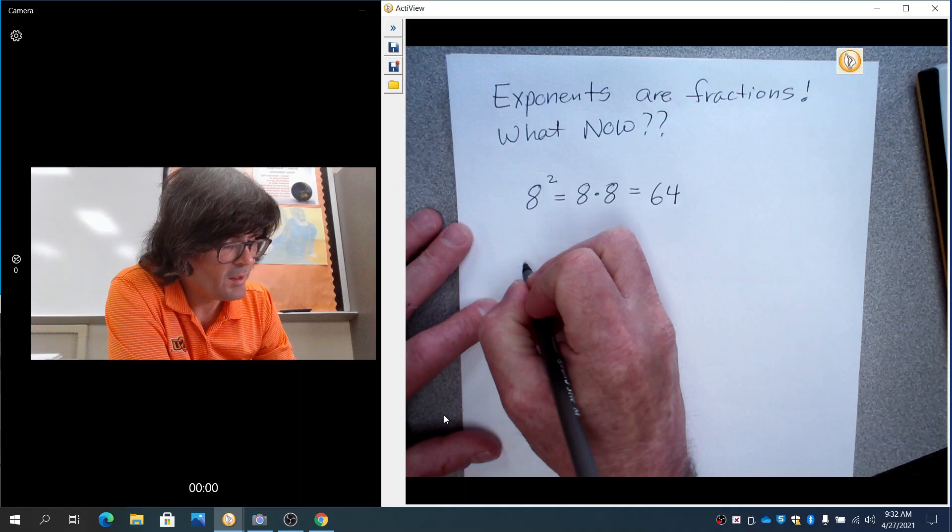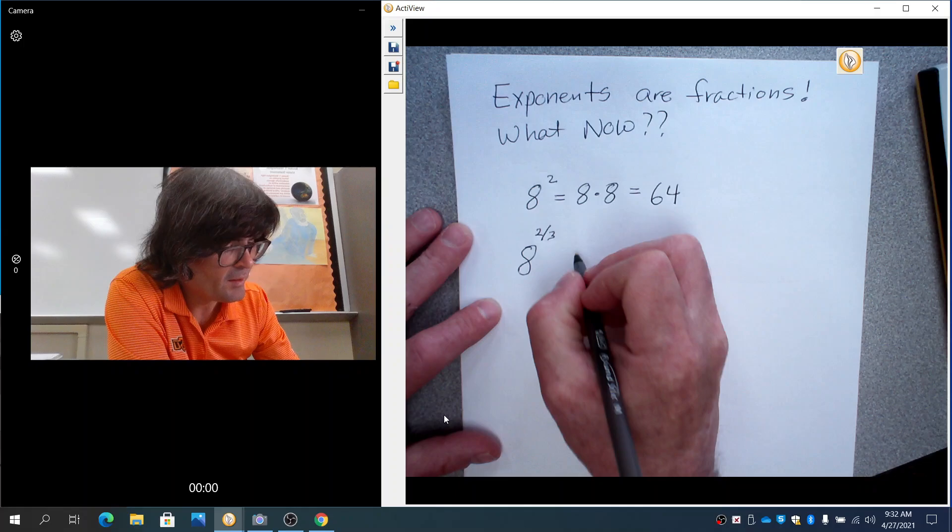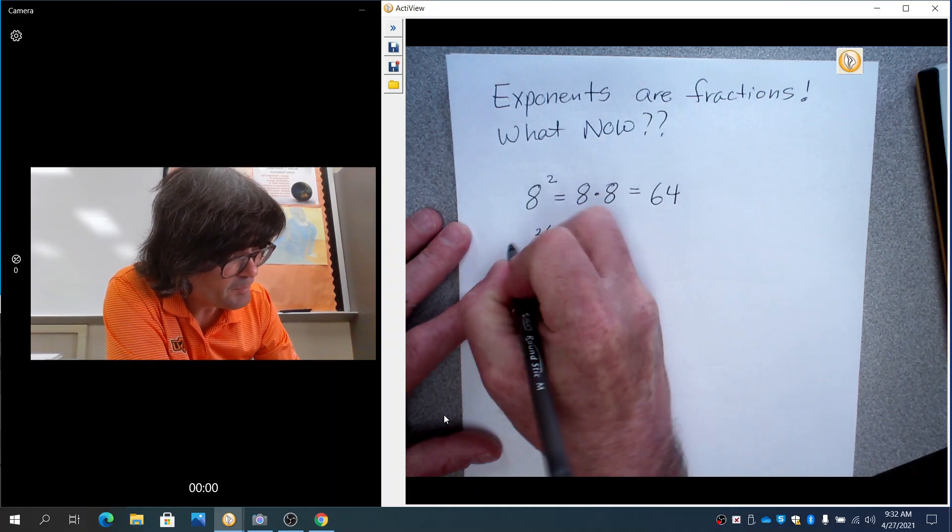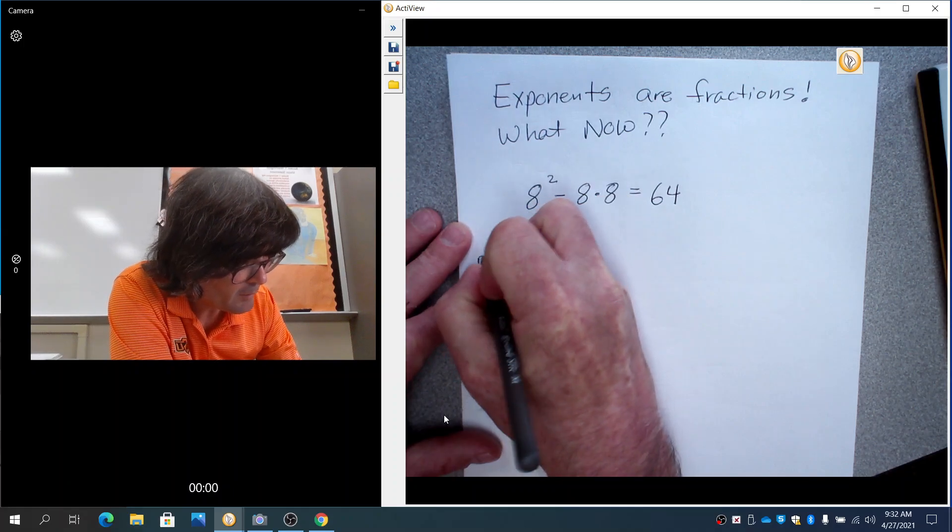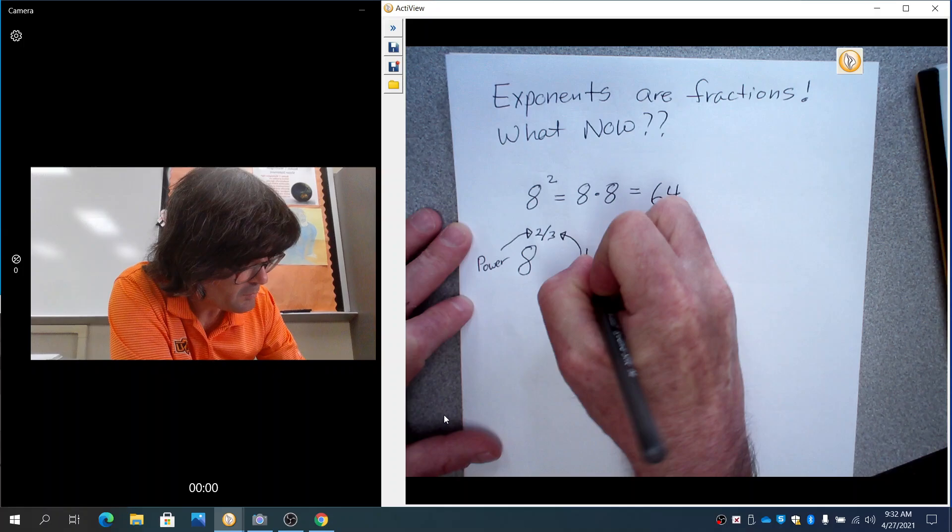If you have 8 to the two-thirds, any time you have a fraction in the exponent, you have to pay attention closely. This top number is the power. This bottom number is the root.